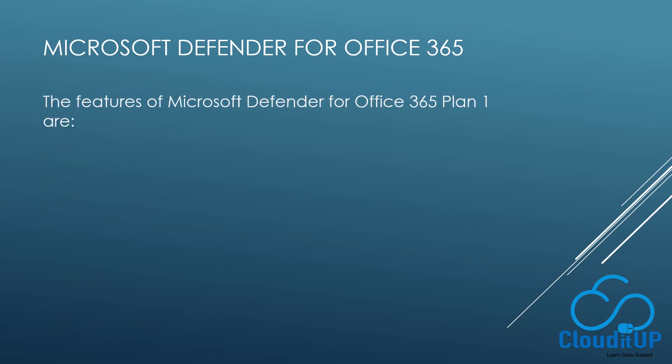The features available in Microsoft Defender for Office 365 Plan 1 are: Safe Attachments for emails, which provides zero-day protection by checking email attachments for malicious content; and Safe Links, which provides time-of-click verification of URLs in emails and Office files.